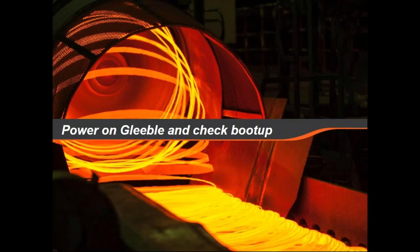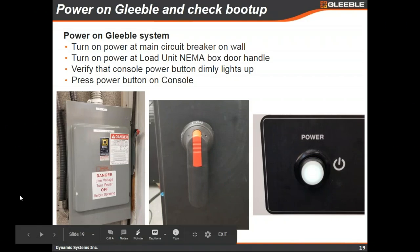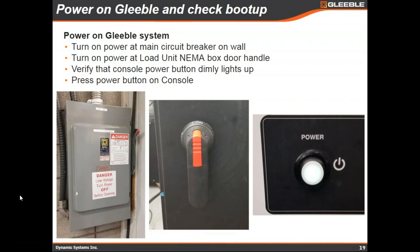Next we'll move to actually powering the Gleeble on and checking the boot-up sequence. Many of you will be familiar with this. Make sure whatever circuit breaker on the wall goes to your Gleeble is switched on, then turn on power at the load unit handle shown in the middle. The power button should dimly illuminate — assuming it does, you can press the power button to power on your Gleeble.